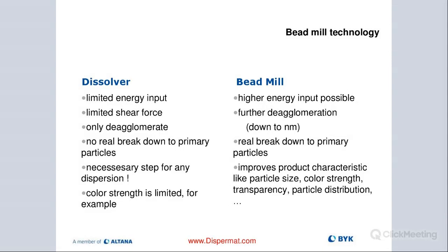The difference here is really: with the dissolver, it's a necessary step — the pre-dispersion before actually starting to mill. We have a limited amount of energy input, because a blade alone without media will never allow for such a high energy input as you have with a milling disk with media. Therefore, our shear force is limited. It's really only to de-agglomerate — going from larger agglomerate clusters down to the aggregate level — and that's when we use the Dispermat dissolver.